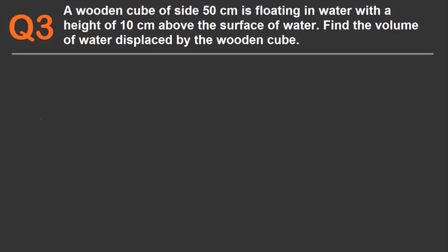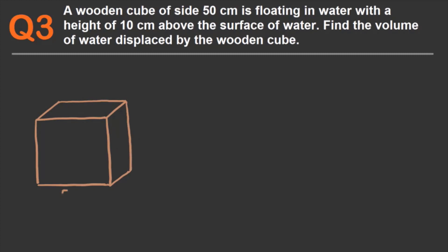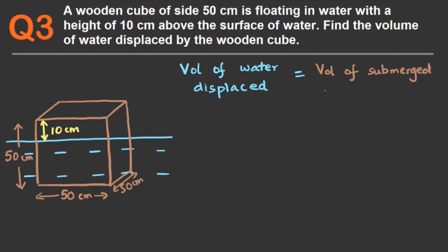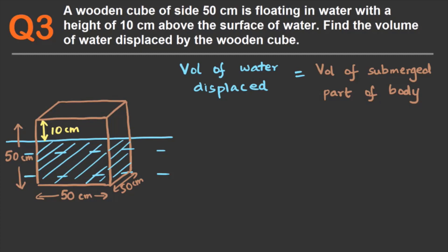Question three: a wooden cube of side 50 centimeters is floating in water with a height of 10 centimeters above the surface of water. Find the volume of water displaced by the wooden cube. Let's draw a diagram to visualize this. The cube has length, breadth, and height of 50 centimeters. With 10 centimeters above the water surface, we need to find the volume of water displaced, which is the volume of the submerged part of the body.